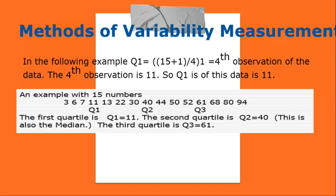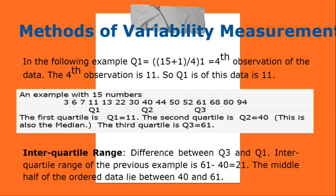In the example with 15 numbers — 3, 6, 7, 11, 13, 22, 23, 40, 45, 52, 61, 68, 80, 94 — the first quartile Q1 = 11, the second quartile Q2 = 40 (also the median), and the third quartile Q3 = 61. Interquartile range: the difference between Q3 and Q1. The interquartile range of this example is 61 − 40 = 21. The middle half of the ordered data lies between 40 and 61.